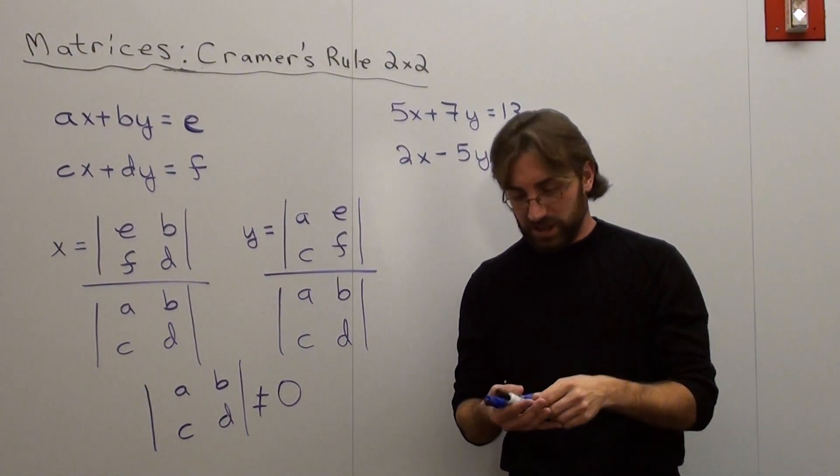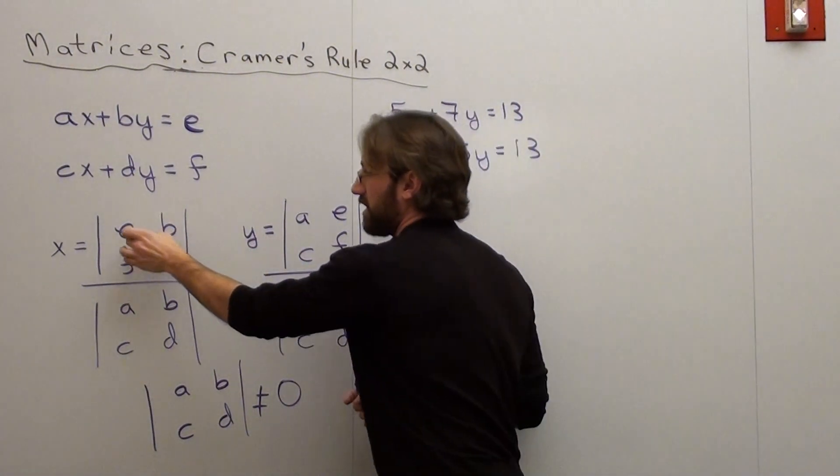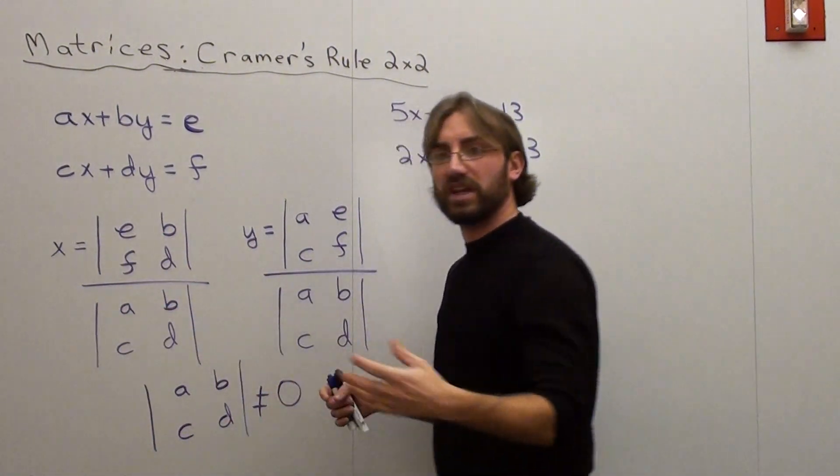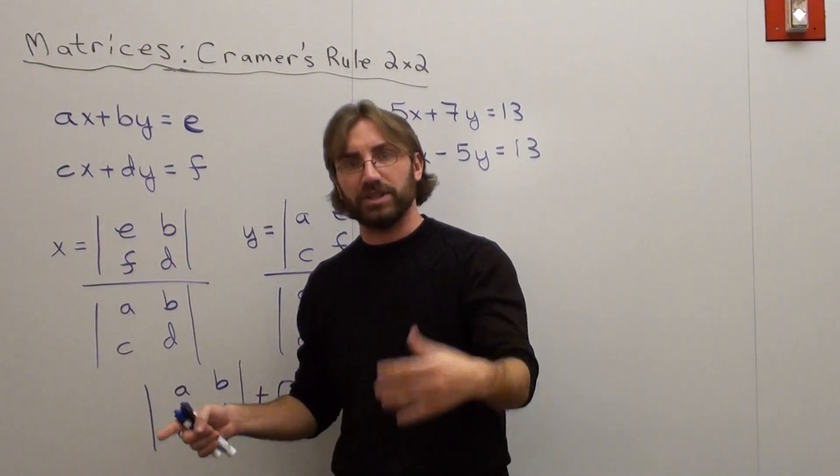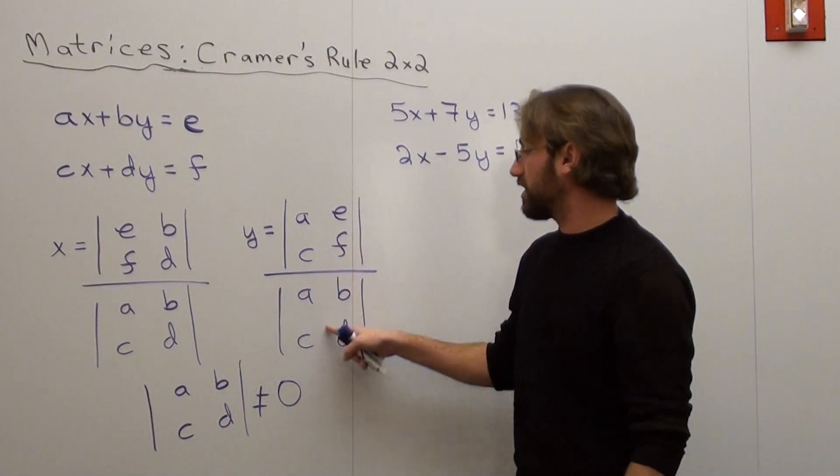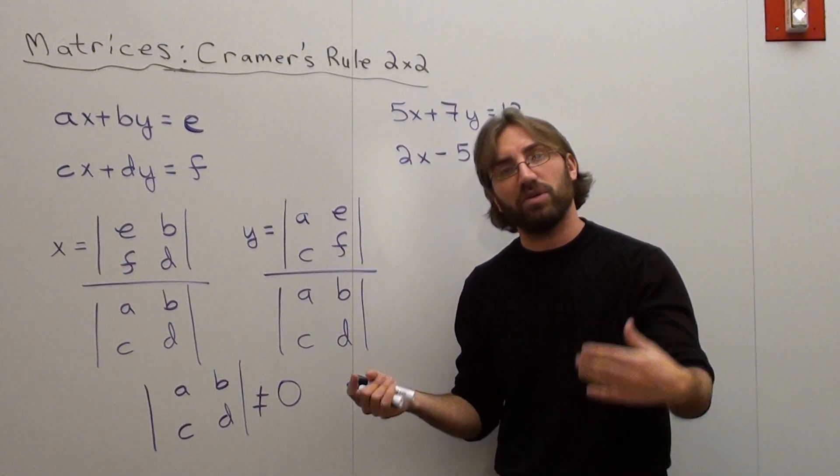And basically what it entails is if I use this formula right here, if I take the determinant of this over the determinant of this, I'm going to figure out what my x value is. And if I take the determinant of this over the determinant of this, I'm going to figure out what my y value is.